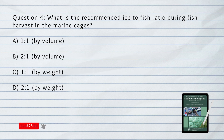Number 4. What is the recommended ice to fish ratio during fish harvest in the marine cages? A. 1 is to 1 by volume. B. 2 is to 1 by volume. C. 1 is to 1 by weight. D. 2 is to 1 by weight.